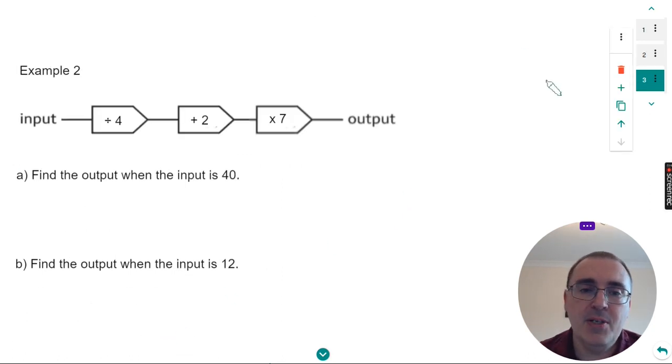Let's look at one more example. This time we have a three operation function machine. To get the output we need to divide the input by four, then add on two, and then times it by seven.